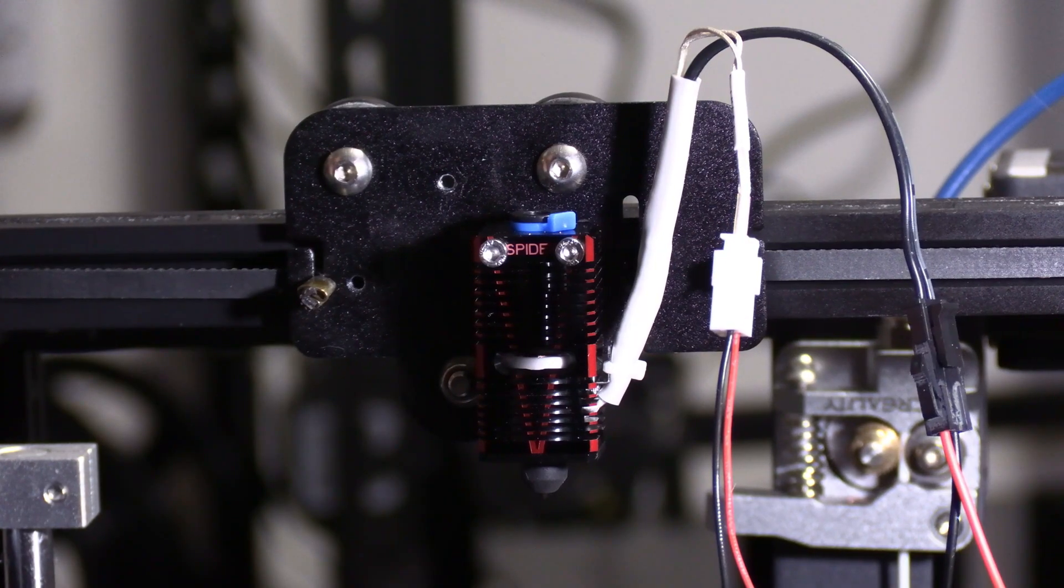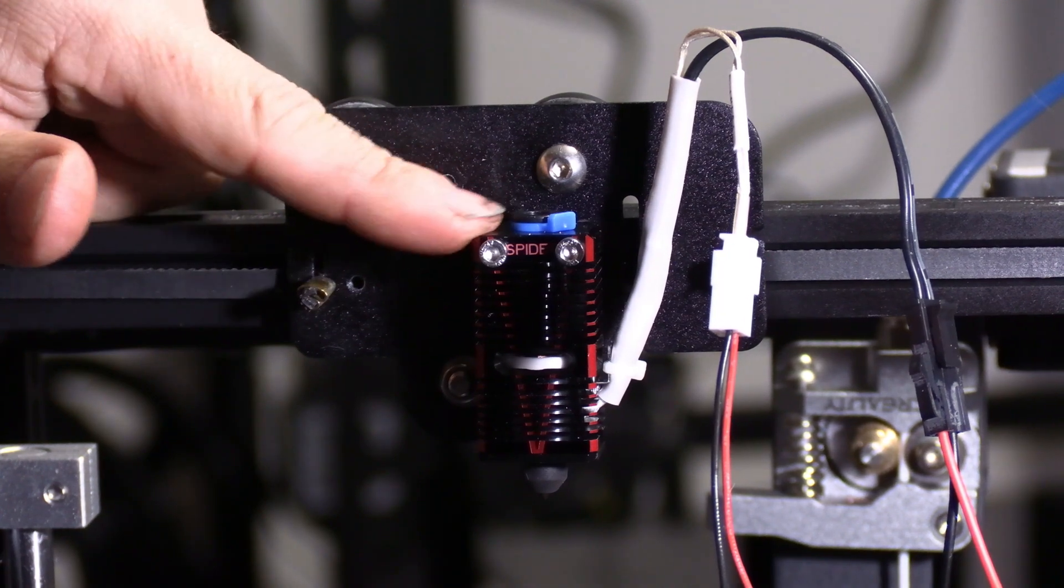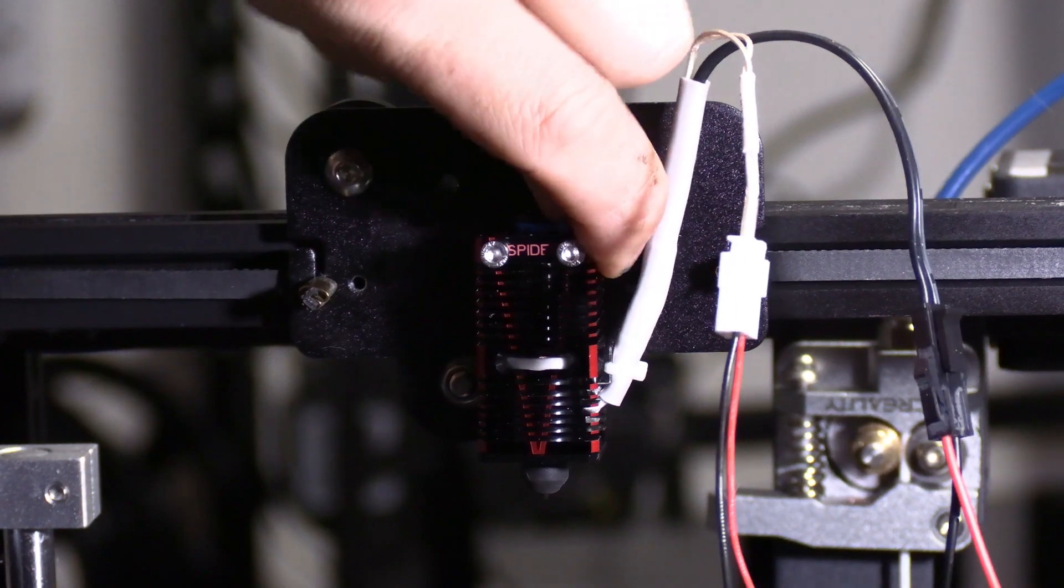Now it's time to put the cover back on. It kind of looks like the cover is going to make it difficult to remove this blue clip for the Bowden tube. So let's install our Bowden tube now.